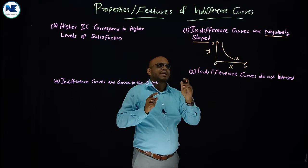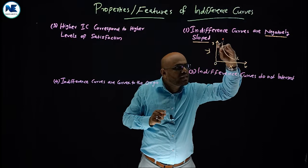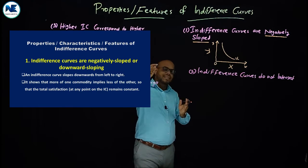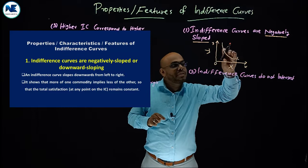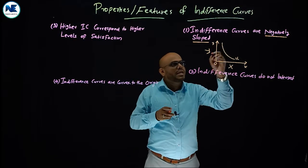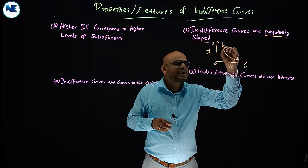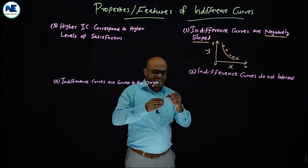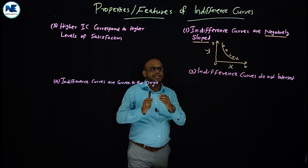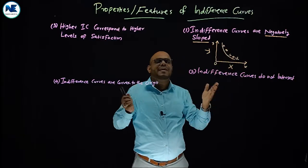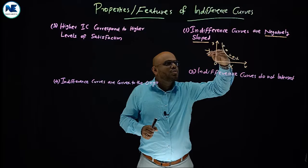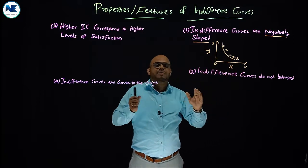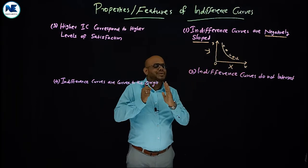Indifference curves are negatively sloped because when the quantity of one commodity is reduced, the quantity of the other must increase for the consumer to maintain the same level of satisfaction. For example, combinations A, B, C, and D all lie on the same indifference curve, representing the consumer's indifference among those bundles.